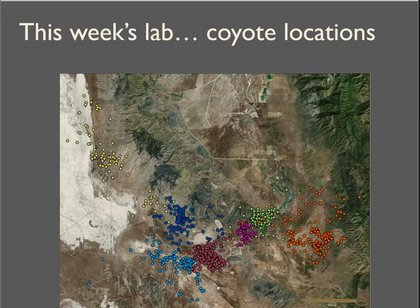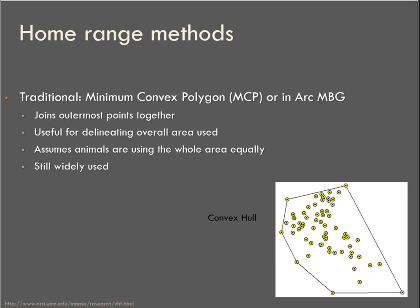Again, a subset of a massive coyote radio collar dataset. This is down in the Dugway Proving Grounds, Southern Utah. A couple of different methods for calculating home ranges. The tried and true traditional method is called a minimum convex polygon. In Arc, it's called an MBG, minimum bounding geometry. It's basically a polygon that's created by connecting the outermost points together. It's called a convex hull because the edges are convex and it's a shell that goes around the outside of the points.